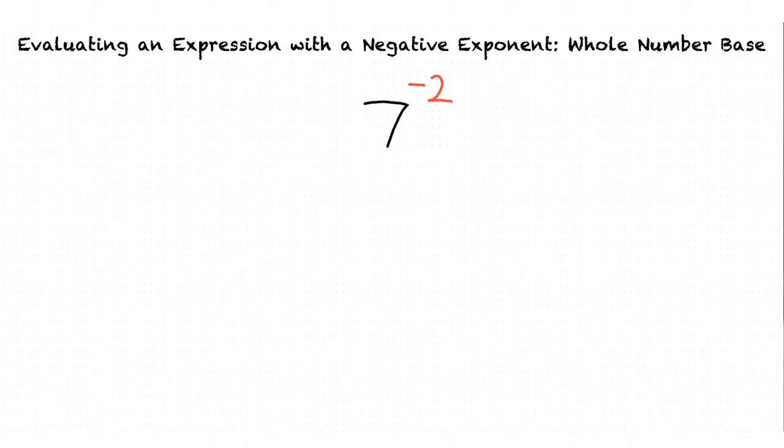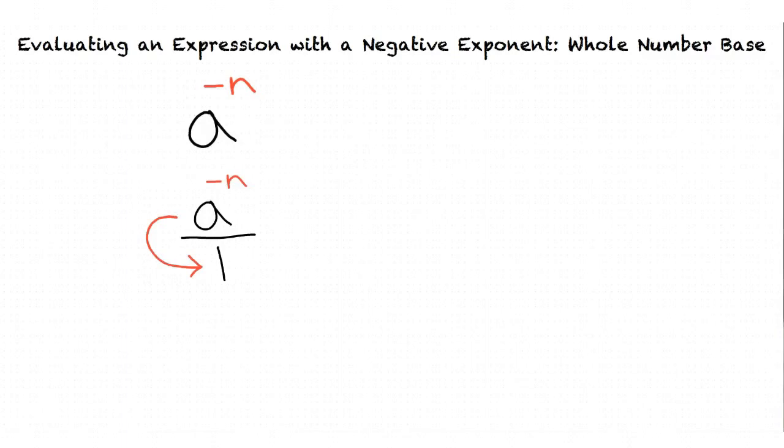How do we make the negative exponent positive? To make the negative exponent positive, we need to move both the base and exponent to the denominator. For example, in our problem a to the power of negative n, we would move both our base and exponent to the denominator. This results in 1 over a to the power of n.